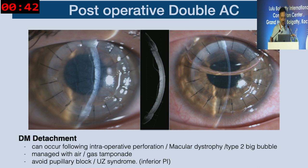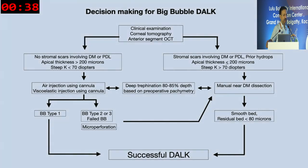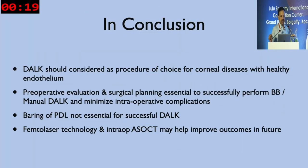This flowchart shows the decision-making for DALK surgery — whether to do big bubble or manual DALK — depending on whether scars involve the Descemet's or pre-Descemet's layer and the response to air injection. In conclusion, DALK should be considered the procedure of choice for corneal disorders with healthy endothelium. Pre-op evaluation and surgical planning are essential. Trying to do big bubble DALK in every case increases the likelihood of abnormal responses to air injection — baring the pre-Descemet's layer is not essential for a successful DALK, but try to go as near-Descemet's as possible.